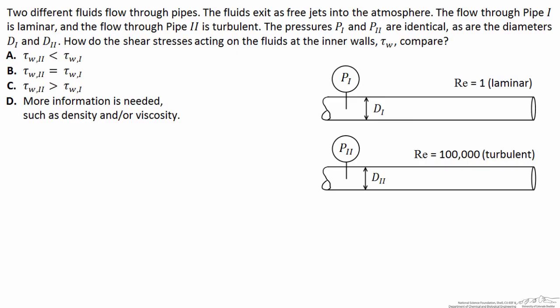Two different fluids flow through pipes, exiting as free jets into the atmosphere. The pressures P1 and P2 are equivalent, and the diameters of the two pipes are equivalent.